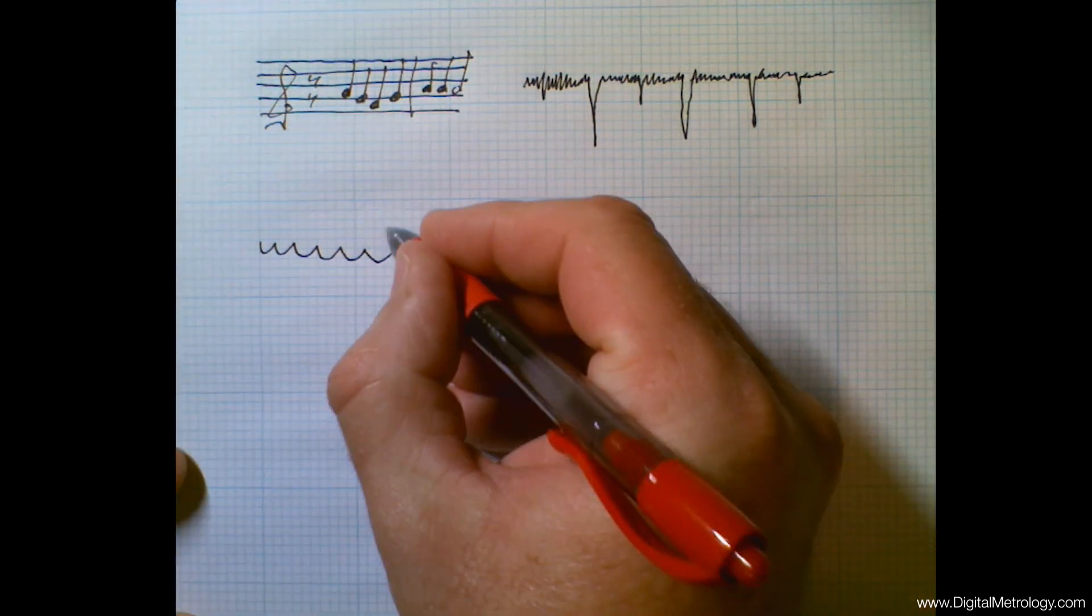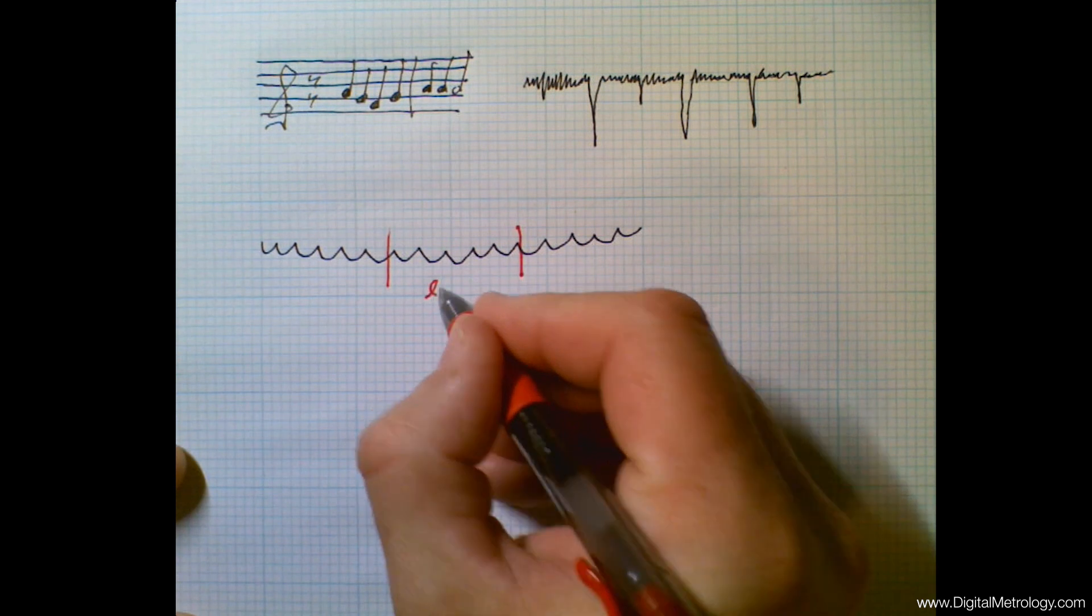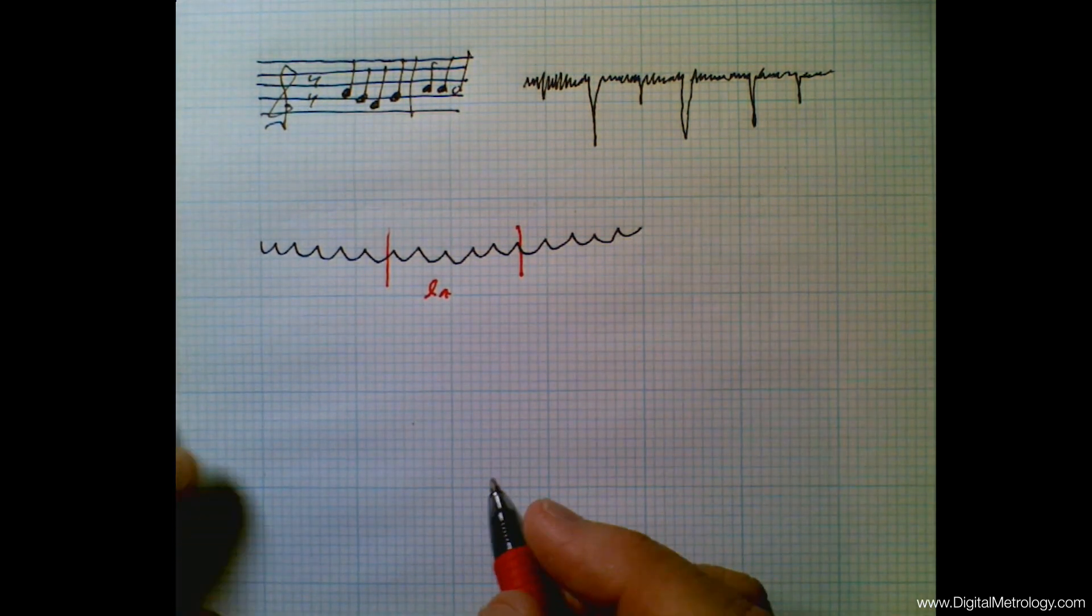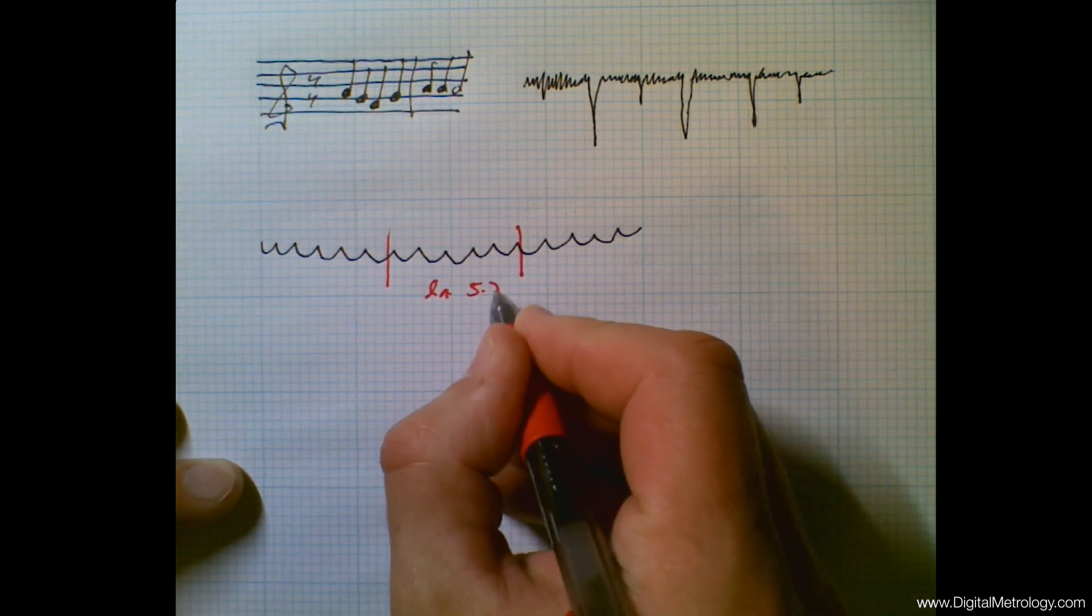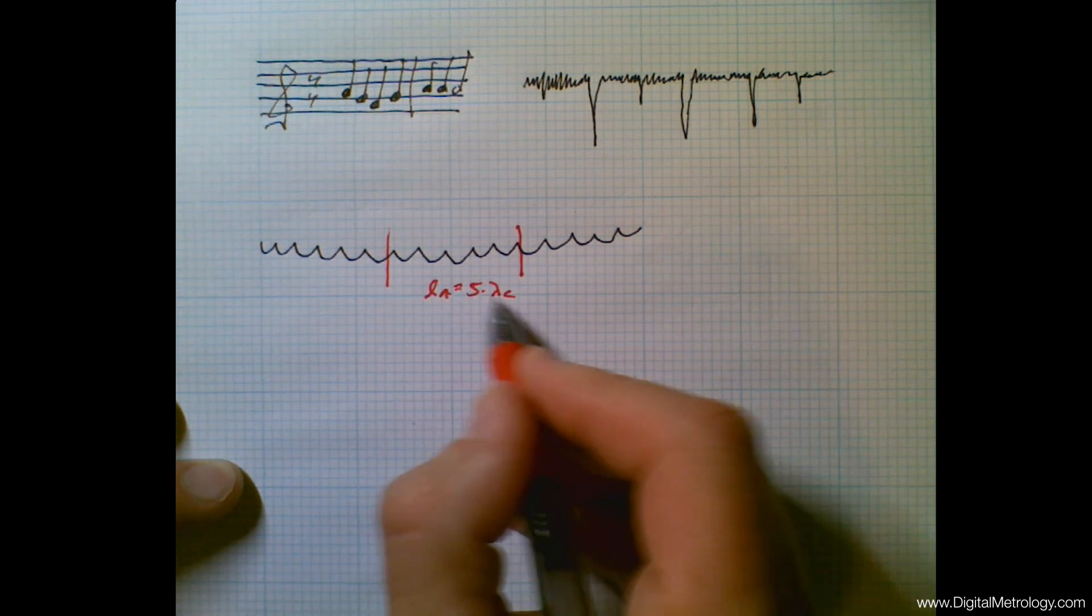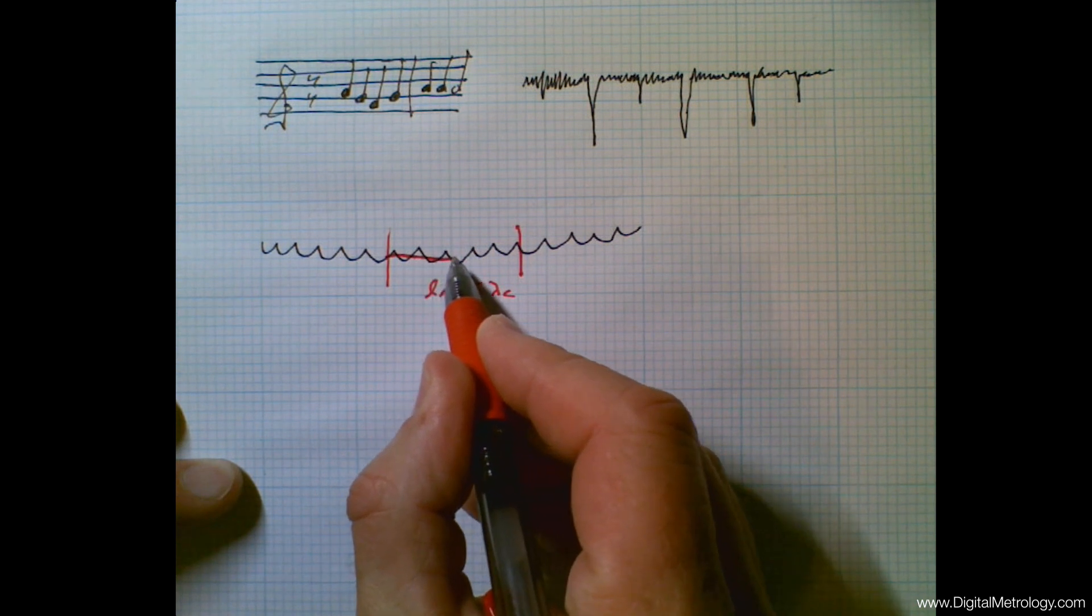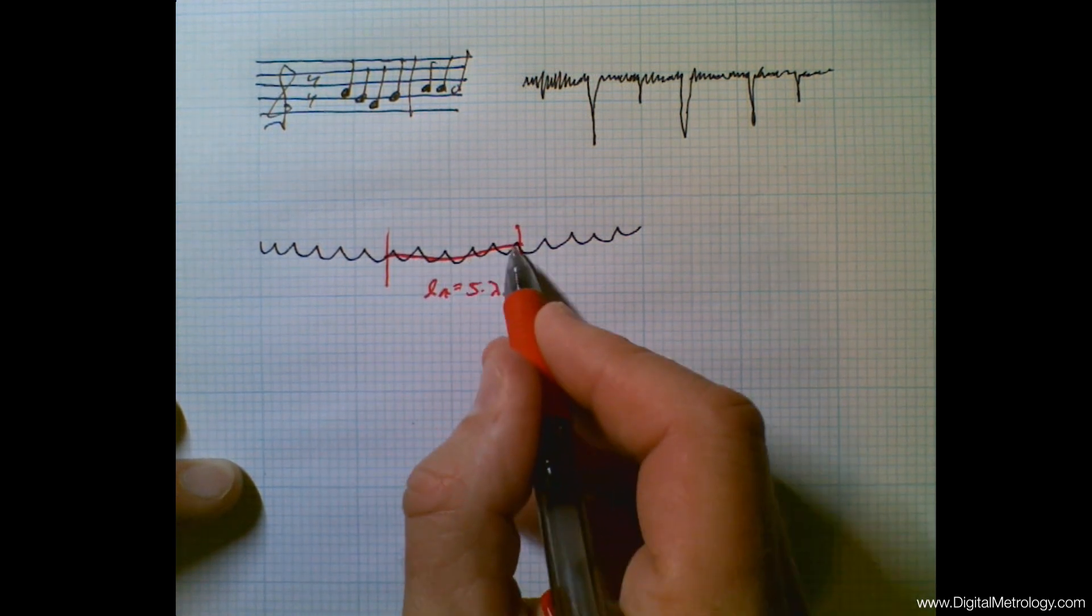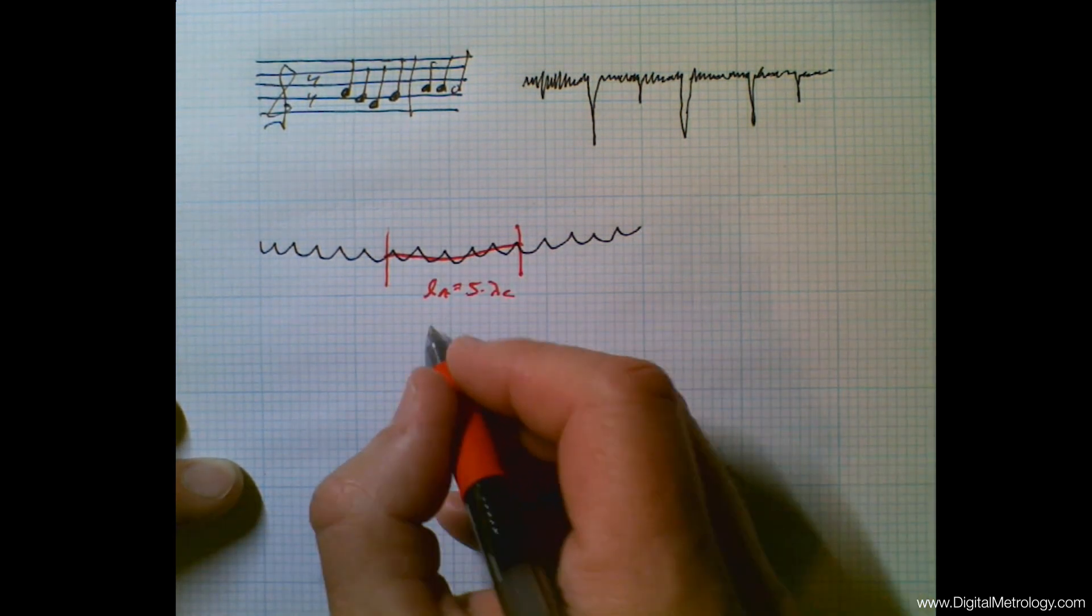So what we have is a recommendation in standards regarding the evaluation length. It's called LN for evaluation length, and the evaluation length is typically five times the filter cutoff wavelength lambda C. So this wavelength separates roughness from waviness, and we're going to typically measure five times that wavelength so we can construct a waviness line running through the surface and do a roughness analysis on that.